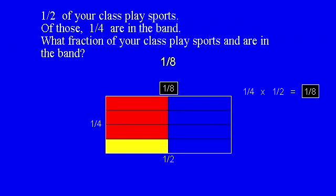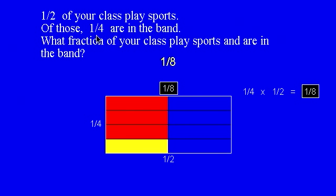That example was taking a fraction of a group. But you can also take a part of a part, and that's also fraction multiplication. For example, if one-half of your class plays sports — this half plays sports — and of those, one-fourth are in the band, not one-fourth of the entire class but one-fourth of that one-half. The 'of' means multiplication: one-fourth times one-half is one-eighth. It could also have been phrased as 'one-fourth of those are in the band,' so here you're taking a part of a part.